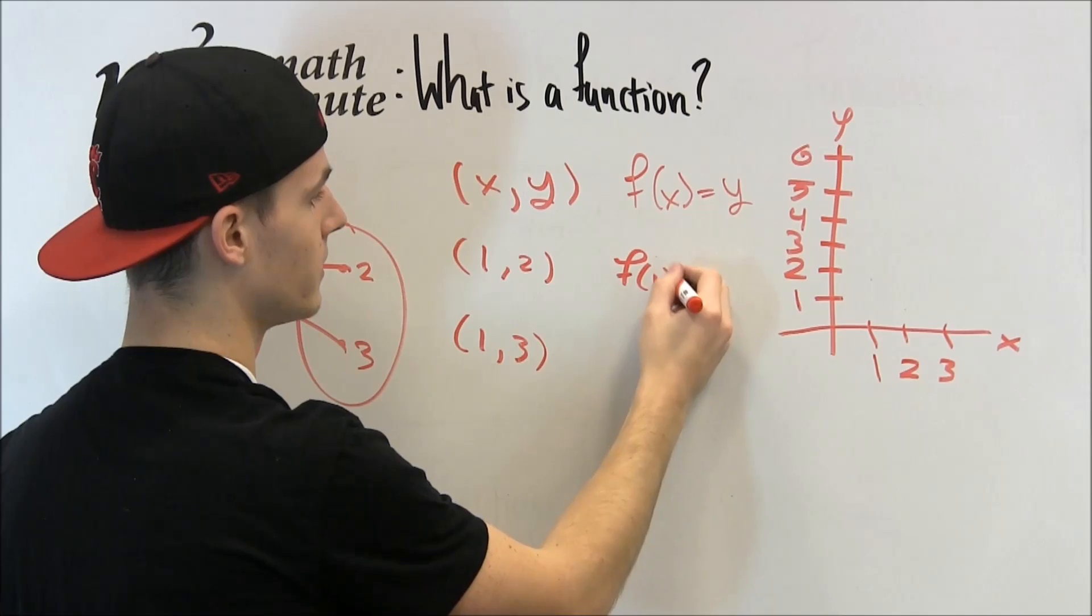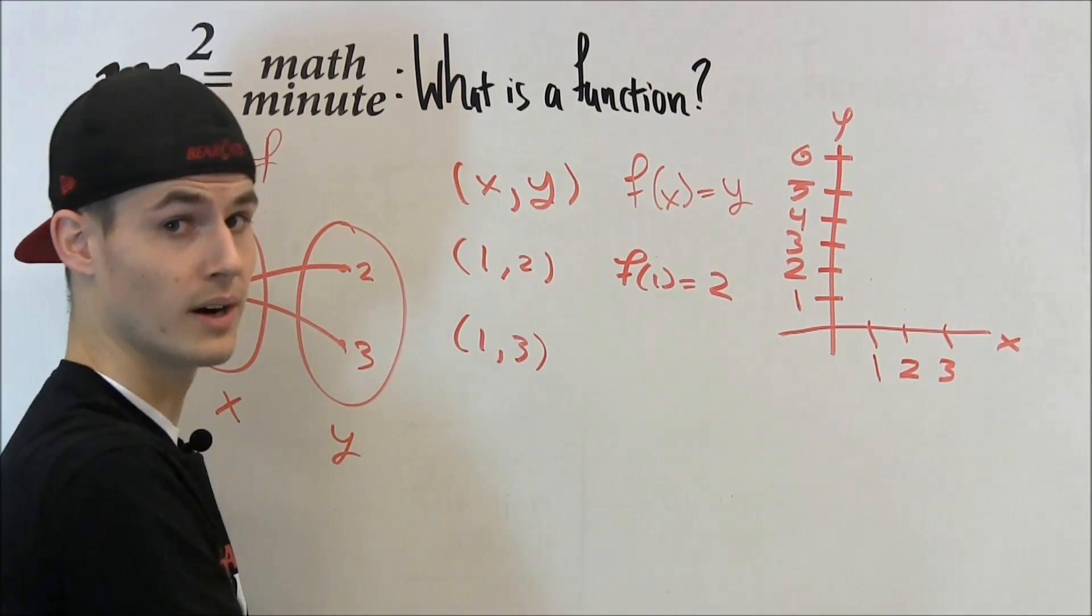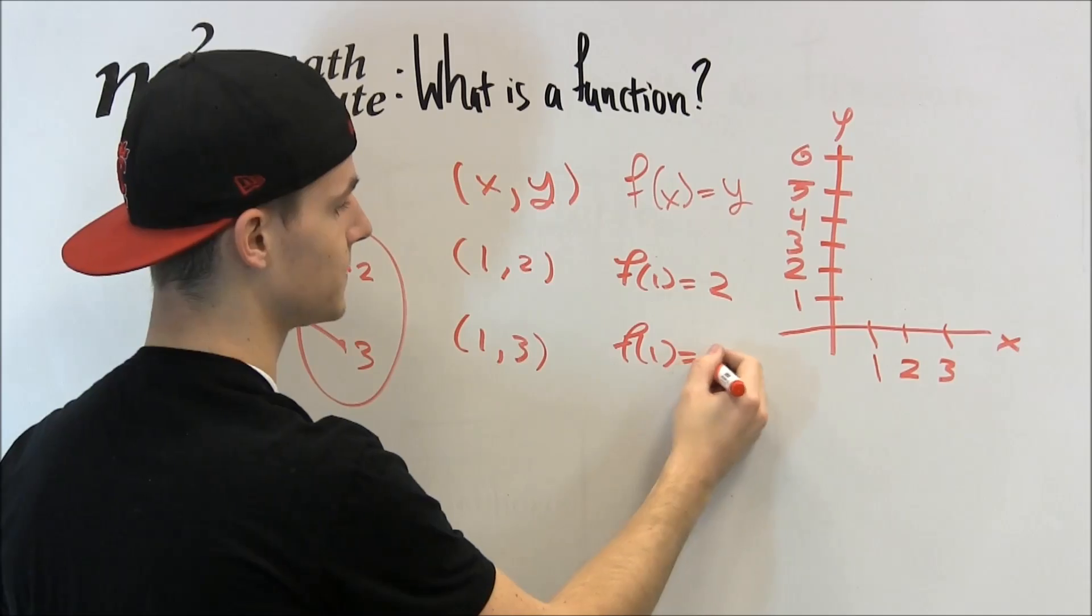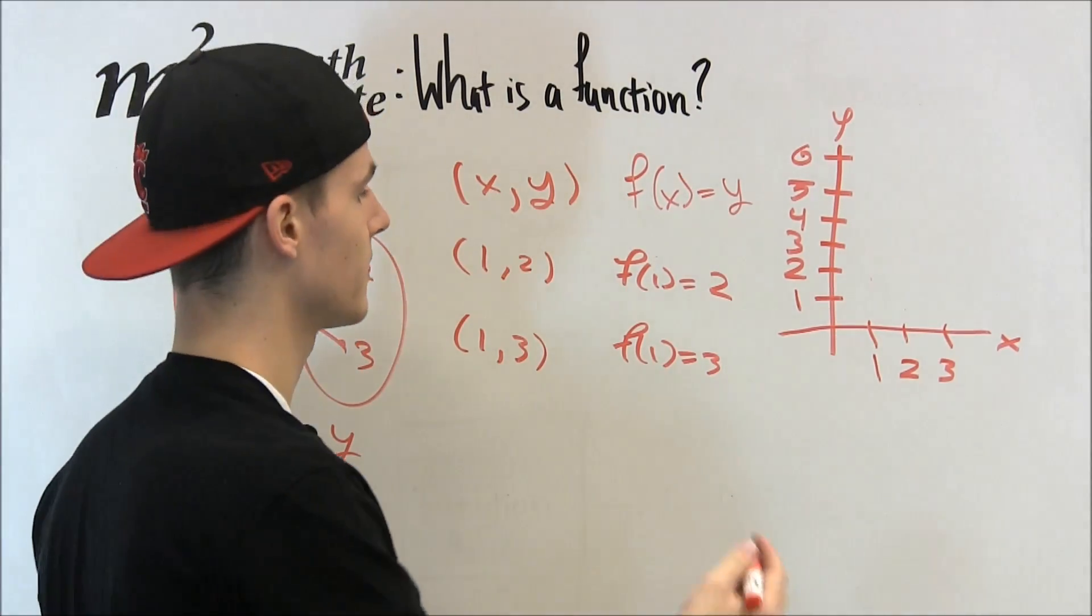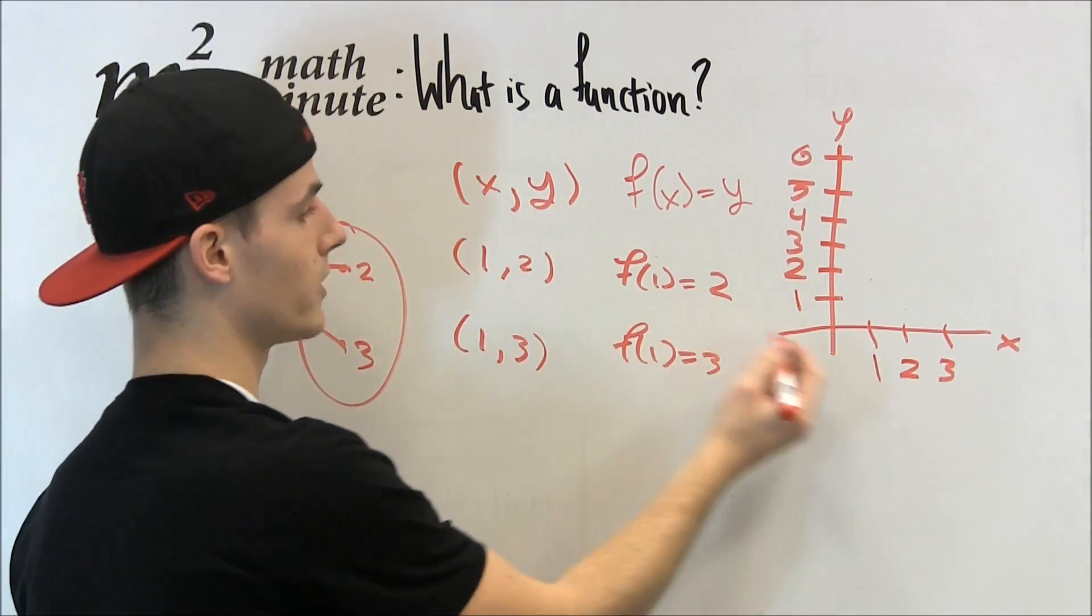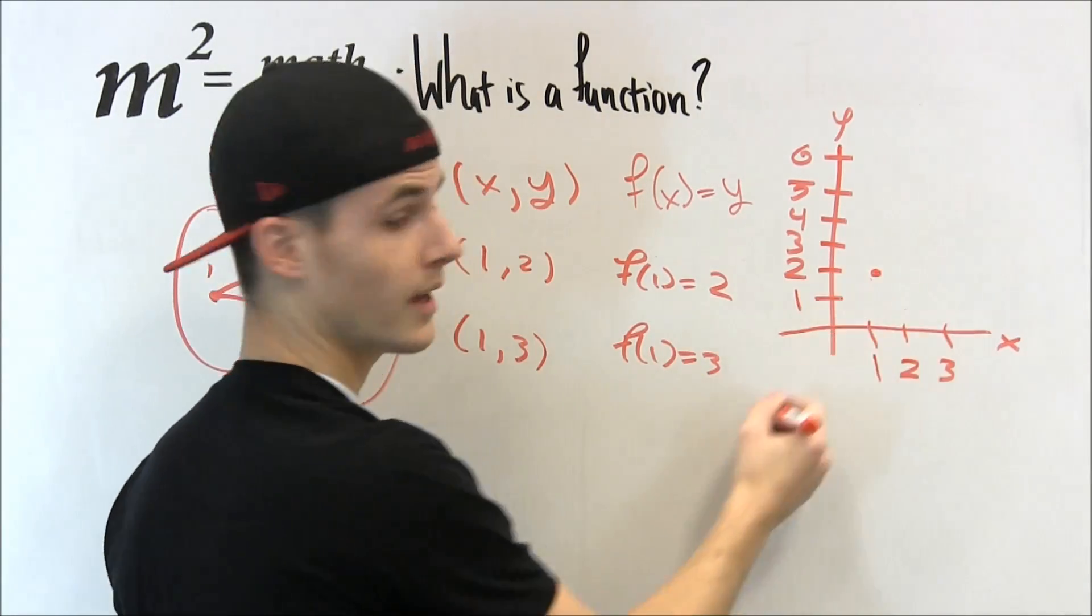Also, f at 1 equals 2, but f of 1 also equals 3. Now this is where graphically we can show there's a very specific test. So we're going to plot our ordered pairs, 1 and 2, and 1, 3.